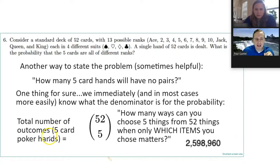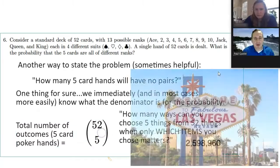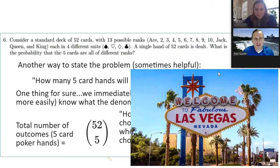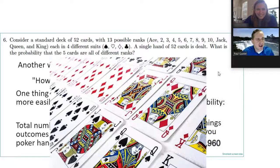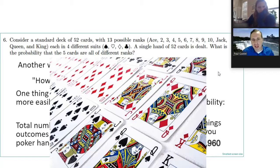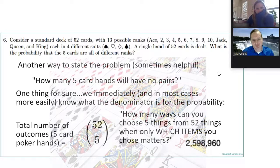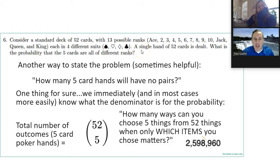We're in Las Vegas again. Consider a standard deck of 52 cards: 13 possible ranks — ace, two through ten, jack, queen, king — and four different suits: spades, hearts, diamonds, and clubs. A single hand of 52 cards is dealt, and a single hand is traditionally five cards.